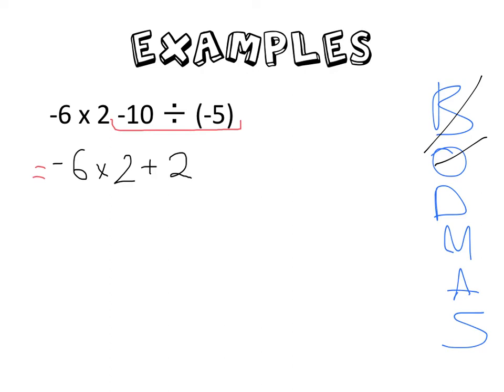Negative 6 times 2 plus 2. And then I re-evaluate. I look at this line here and I say, I've done that division. Is there any multiplication? Yep, there is. And I've got a negative 6 and I times it by 2. That's a positive 2.